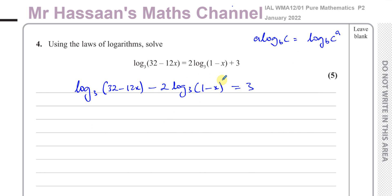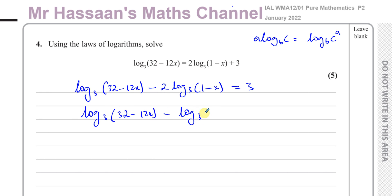So that 2 is going to be written on top of this bracket. We have log to the base 3 of 32 minus 12x, minus log to the base 3 of 1 minus x to the power of 2, and that's equal to 3.